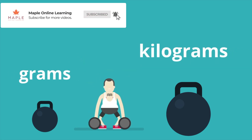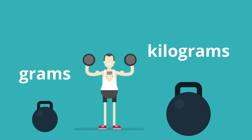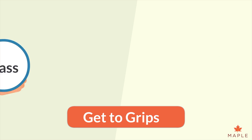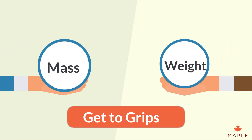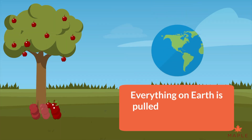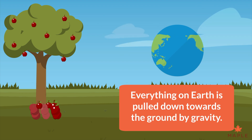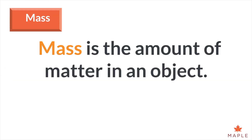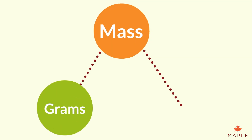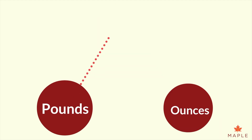Understanding grams and kilograms is incredibly important in maths but also in real life. Firstly, let's get to grips with the two words: mass and weight. Weight is a force — everything on earth is pulled down towards the ground by gravity. Mass is the amount of matter in an object. Mass is measured in grams and kilograms, or pounds and ounces.